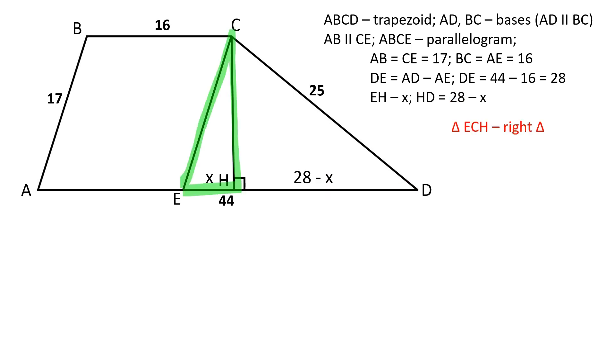Triangle ECH is a right triangle. By the Pythagorean theorem, CH squared is equal to EC squared minus EH squared.